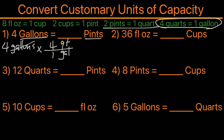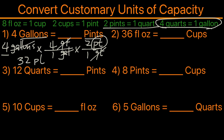After crossing out the gallons we are at quarts, but we need to convert to pints. So we convert again — this time quarts go on the bottom and pints on top: one quart equals two pints. Quarts cross out and we're left with pints. We multiply: four times four is 16, and 16 times two is 32, so we're left with 32 pints.